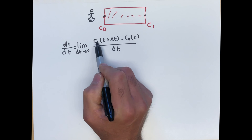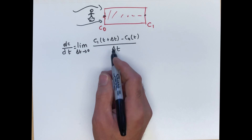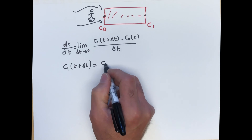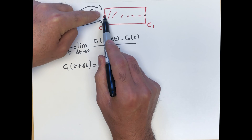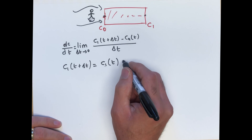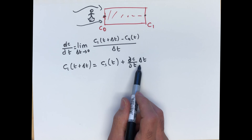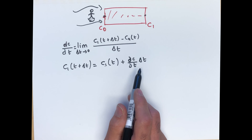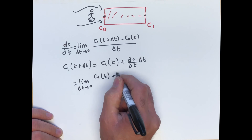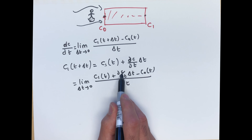If they were at the same position, it would be C0(t+delta t) minus C0(t), but that's not the case because they're moving with the fluid velocity. So we need to think about what C1 at t+delta t is. It equals C1 at time t — when the observer was at C0, C1 had concentration C1(t) — but then once they approached C1, that concentration changed by (∂c/∂t)·delta t.